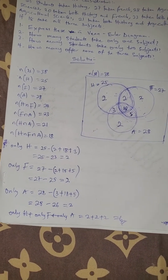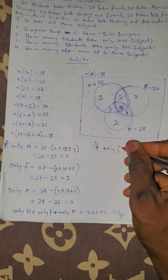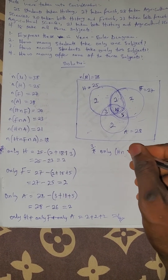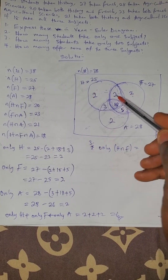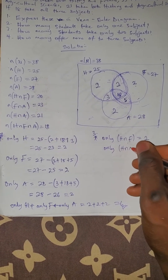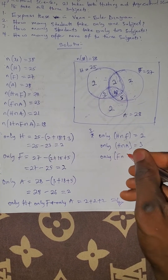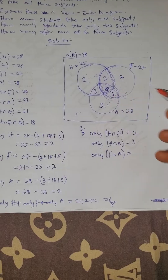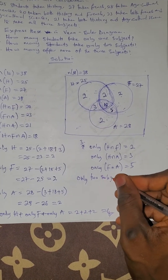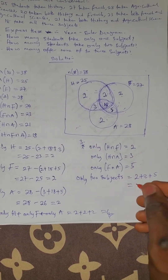Question three asks for the number of students studying only two subjects. Only History and French is 2, only History and Greek is 3, and only French and Greek is 5. So only two subjects equals 2 plus 3 plus 5, which gives 10.